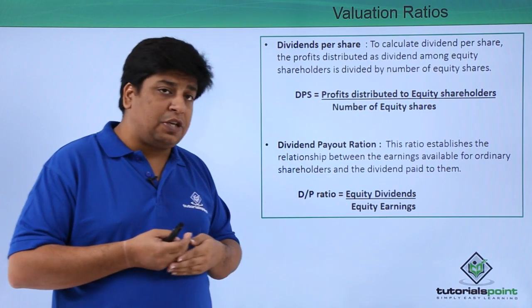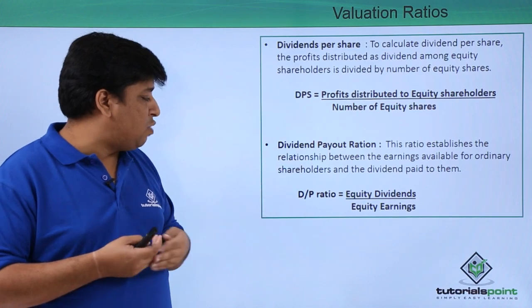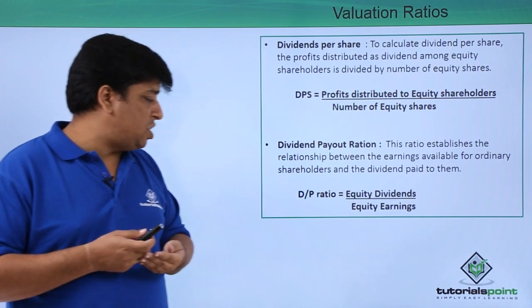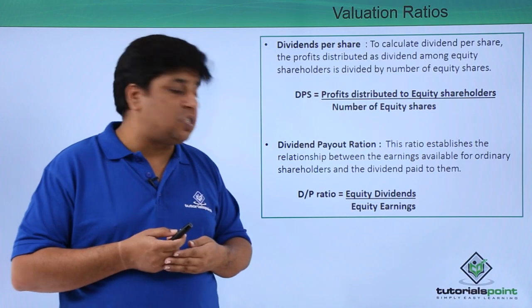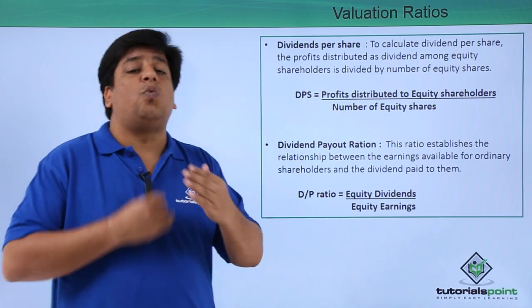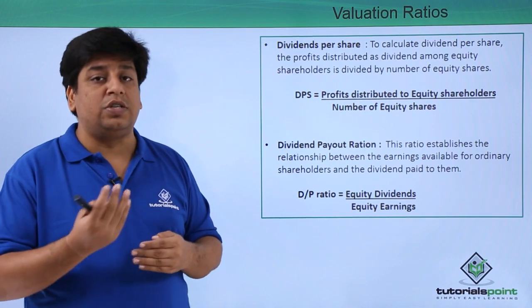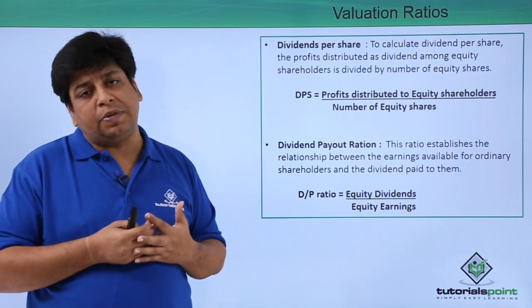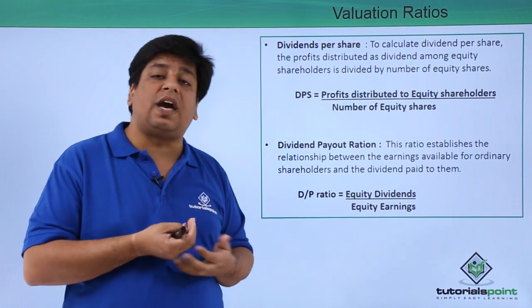The dividend payout ratio establishes the relationship between earnings available for ordinary shareholders and the dividend paid to them. The formula is equity dividends divided by equity earnings — showing what portion of the company's earnings has been paid out to shareholders as dividend.